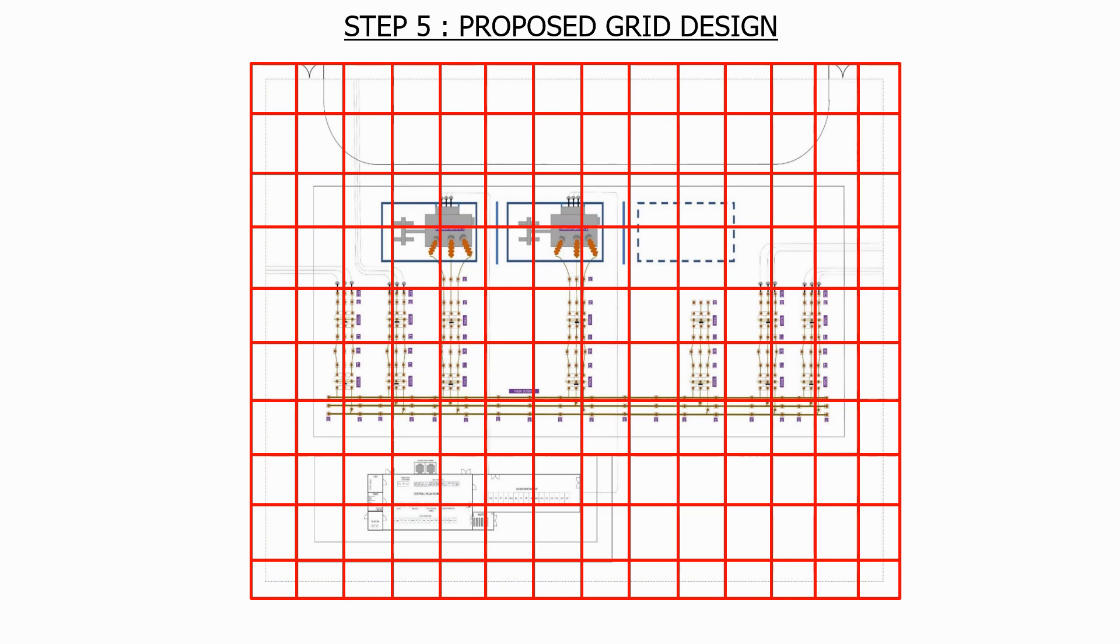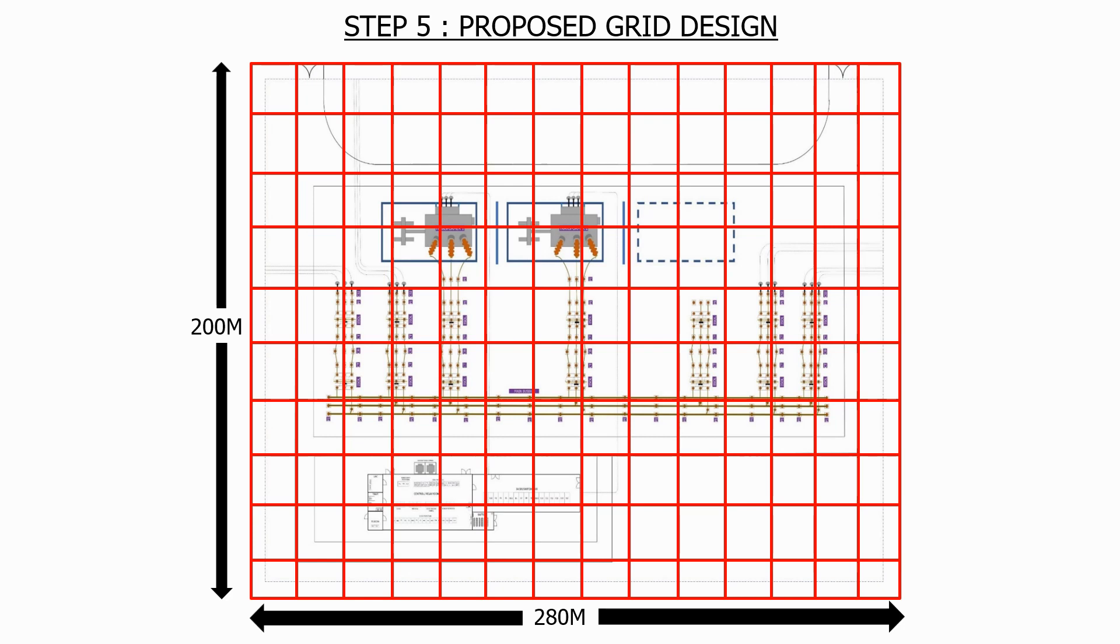So we can quickly define the overall dimensions. In this case, a width of 200 metres and a length of 280 metres. These dimensions are pretty much fixed as we're not going to build a bigger substation just so we can install a bigger grounding grid.